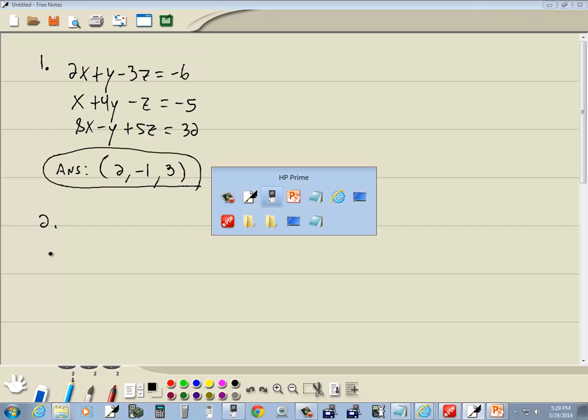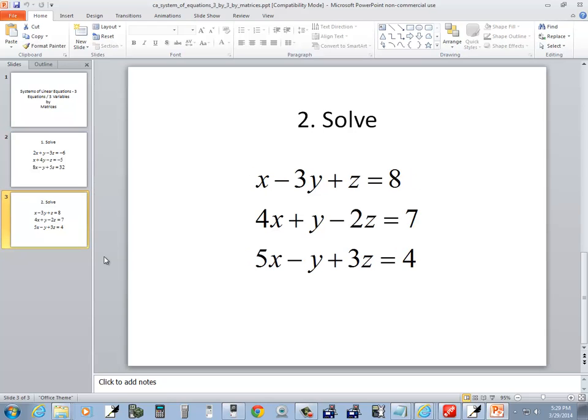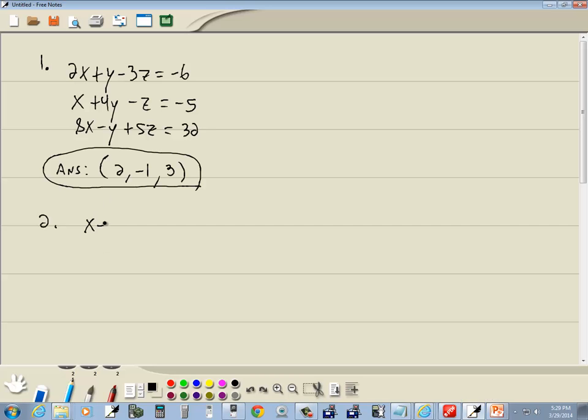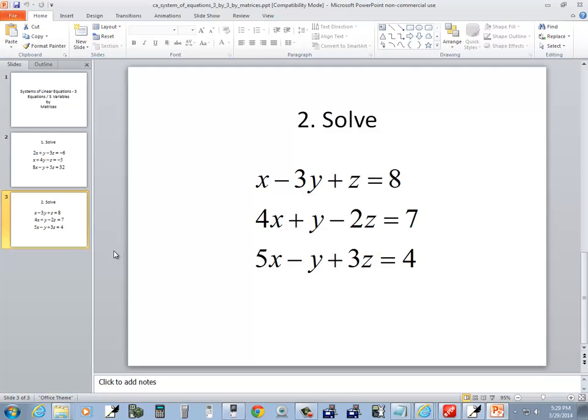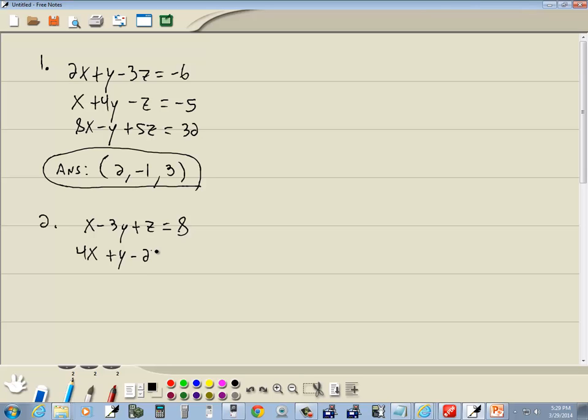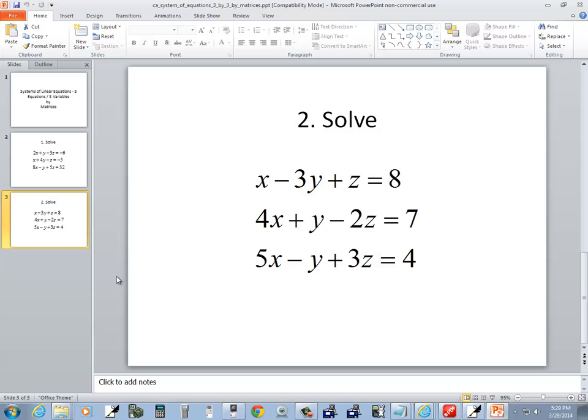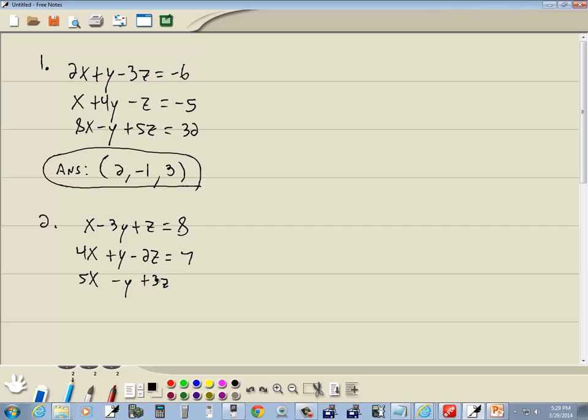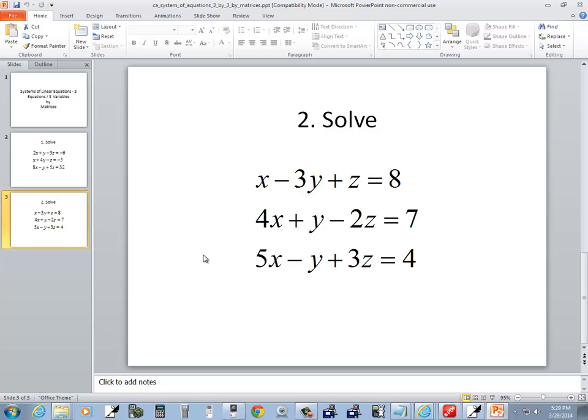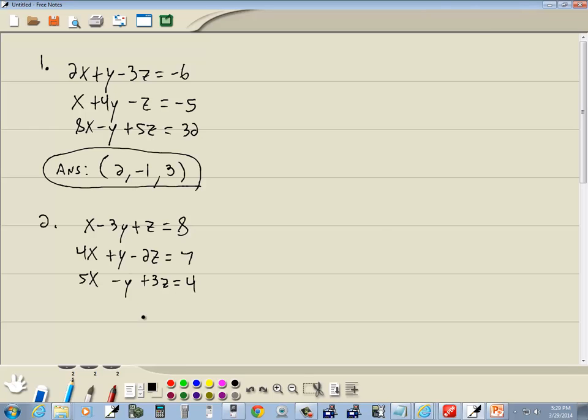Let's look at our second one. We've got x-3y+z=8. And 4x+y-2z=7. 5x-y+3z=4. Let me double-check my numbers. 8, 7, 4. 1, negative 2, 3. Negative 3, 1, negative 1. 1, 4, 5.